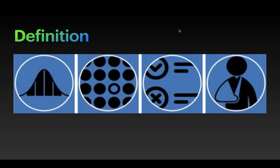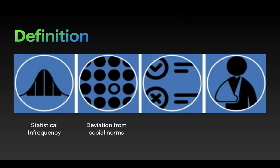So there are four criteria we can use to talk about abnormality — what constitutes abnormal behavior. First, we talk about statistical infrequency. Statistics is the measurement of things, and when you measure people's behavior in a population of human beings, you want to know what happens the most. What happens the most is usually the average score. Infrequency is the opposite of frequent — something that doesn't happen very often. Behavior that is rare. Another thing we can look at is the deviation from social norms, which refers to any behavior considered normal by society's standards.